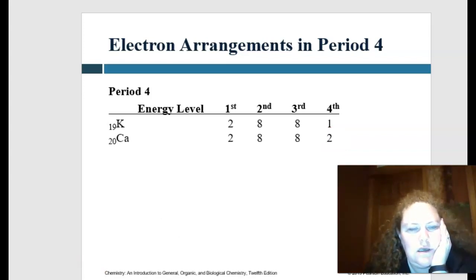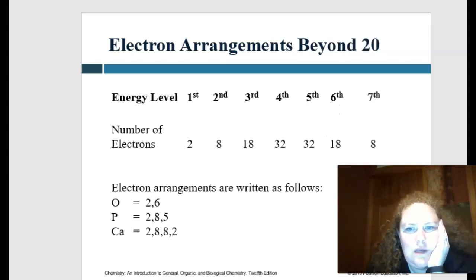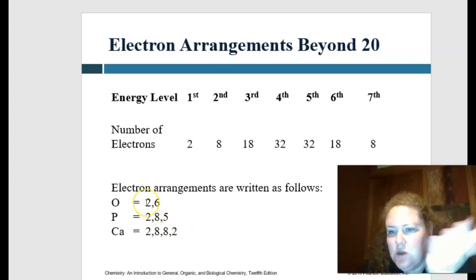So let's see if we can kind of think about what's going on. Here's the levels. Number of electrons in the first is two, second is eight, third is 18, fourth is 32, fifth is 32, sixth is 18, and seventh is eight. And so how we know what orbital we're in is we separate them by commas, and so it's always going to go in numerical order.